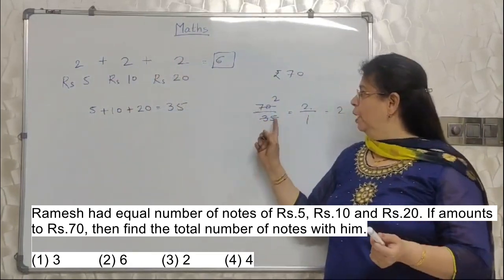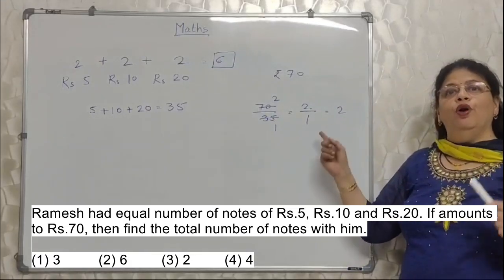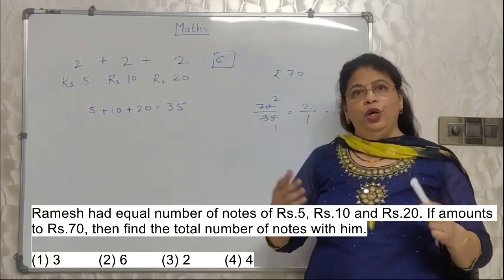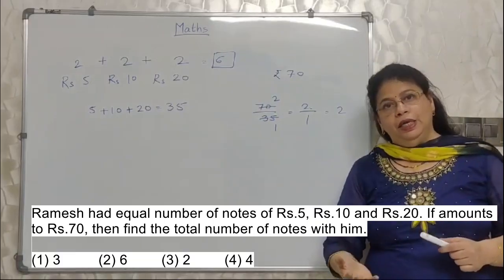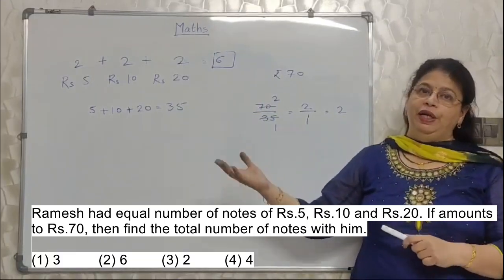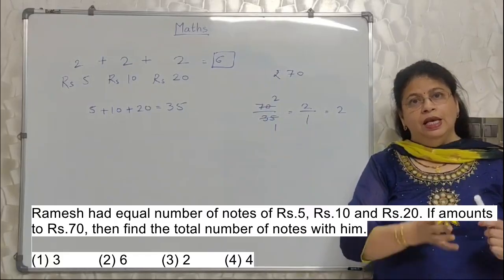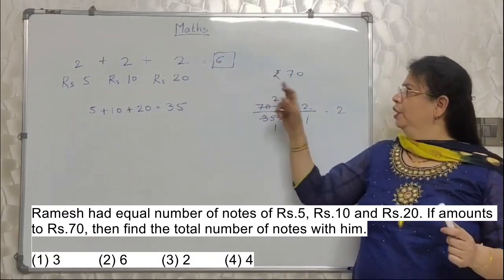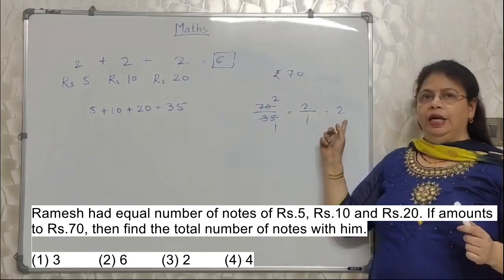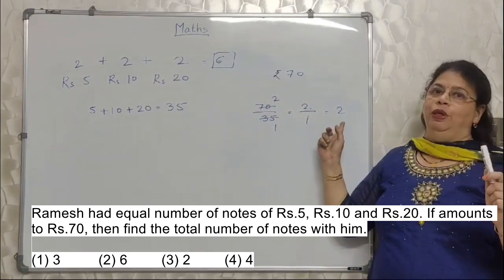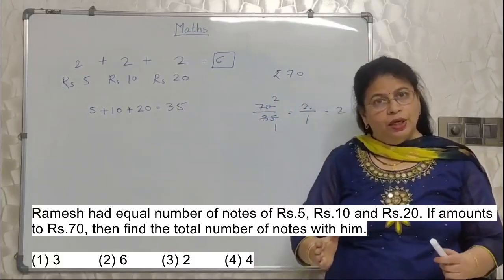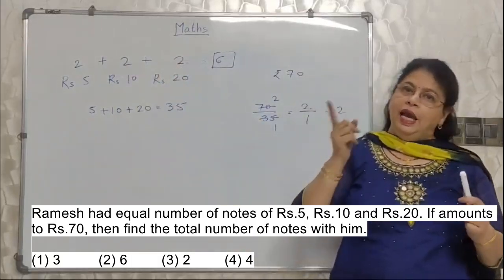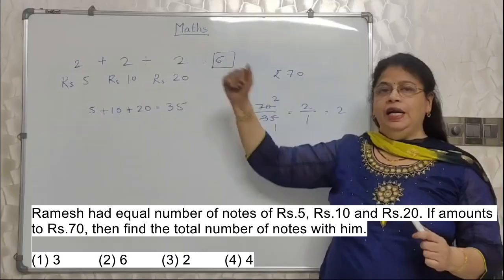This division result, that is the number of notes of each denomination. Okay. Isn't it easy? If we do it with x, then you have to do 5x plus 10x plus 20x is equal to 70. Then you will add all x's. Then you will do division. Why? You simply do addition of these 3. Then whatever is the addition, divide 70 by that addition. You will get the number of notes of each denomination. And then whatever they have asked, read the question again and arrive at the answer. Everything is ready here. Correct?